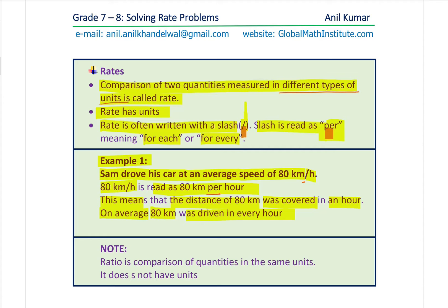Now, note the very important difference between ratios and rates. When we talked about ratio, a ratio is a comparison of quantities in the same units. The emphasis should be on 'same units' versus 'different units'. When it is different units, it is a rate. When it is the same units, it is a ratio. For ratios, the same units cancel out, so ratios do not have units. But for rates, we always have units.